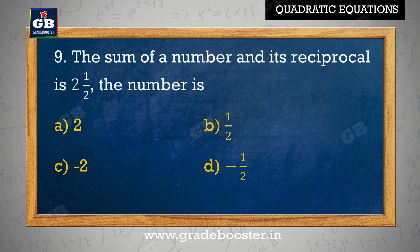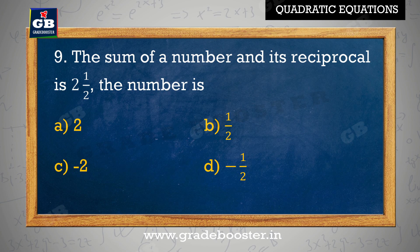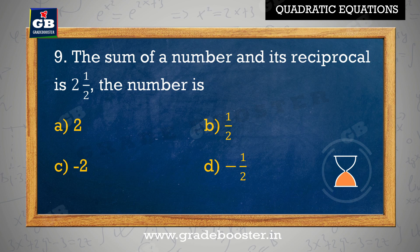The sum of a number and its reciprocal is 2 and 1 by 2. The number is: A. 2, B. 1 by 2, C. minus 2, D. minus 1 by 2.